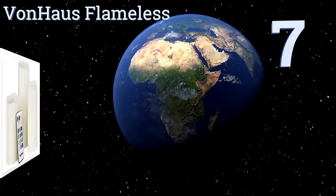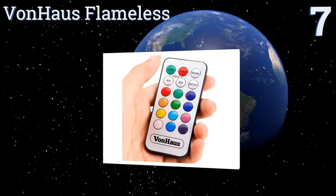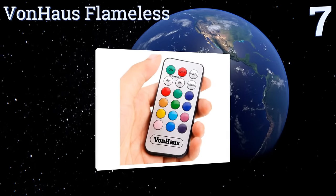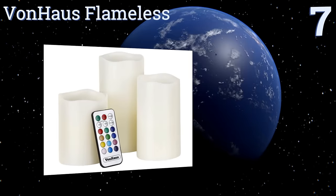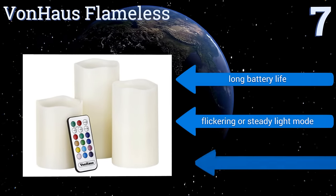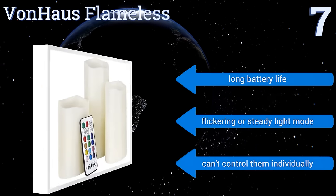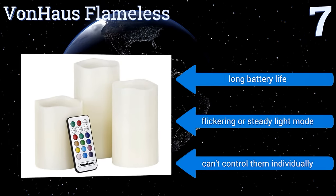At number 7, the Von House Flameless Set lets you relax, unwind and brighten up your living space without having to spend a lot. They're made with real ivory coloured wax and can switch remotely between 12 different colours depending on your needs and your mood. They feature a long battery life and a flickering or steady light mode, but you can't control them individually.